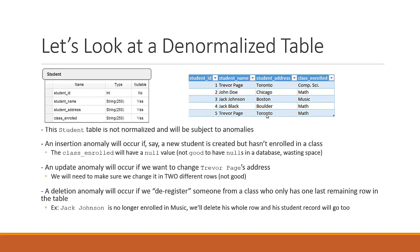Finally, you can also have deletion anomalies that could occur if we de-register someone from a class. If you want to de-register Trevor Page from the math class, we would just delete the row — and math is no longer in there, so he's no longer enrolled in that class. However, if you also de-enroll Jack Johnson from music, we need to delete the row. But now if we delete the row, Jack Johnson no longer exists as a student. So that's an unintended side effect called a deletion anomaly — when we de-enroll him from music, we don't want to delete his entire student record.